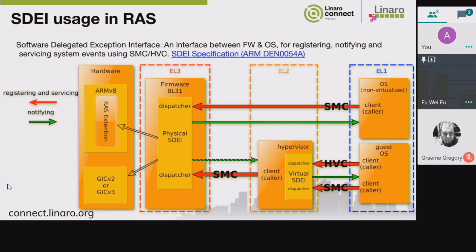We've talked about how firmware supports RAS. How about the software? On ARM64, we plan to use the firmware-first mechanism. But the OS can also decide which system events it wants to handle and which to ignore. The Software Delegated Exception Interface, SDEI, is an interface between the firmware and OS for registering, notifying, and servicing system events. It's not just for RAS — it can also be used in debugging. You can download the SDEI spec online.